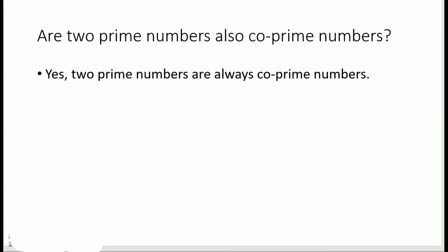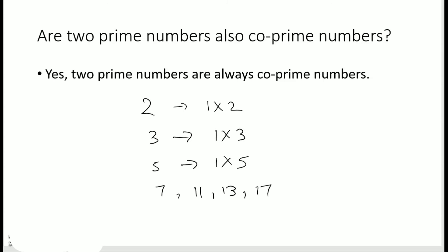Are two prime numbers also co-prime numbers? Yes! Two prime numbers are always co-prime numbers. Prime numbers are those numbers which have only two factors: 1 and the number itself. For example, 2, 3, 5, 7, 11, 13, 17, 19, and so on. If you take any set of prime numbers, the only common factor would be 1. So two prime numbers are always co-prime numbers.